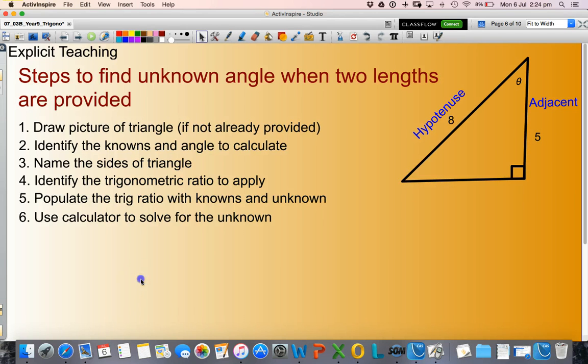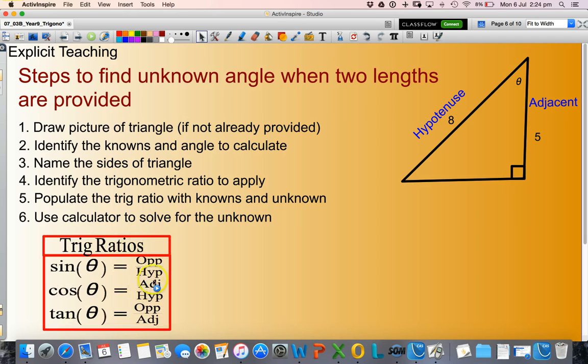Which ratio uses adjacent and hypotenuse? That is cosine theta. So I have identified the trig ratio. Cosine theta equals adjacent divided by hypotenuse. So populate those numbers. Cosine of theta, theta is my unknown, equals 5 divided by 8.